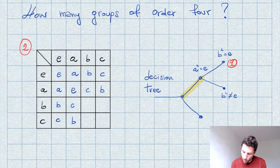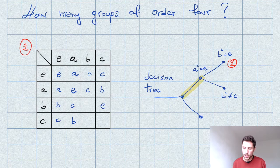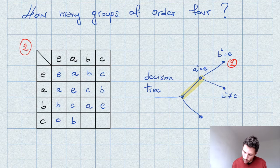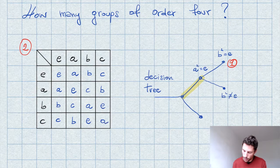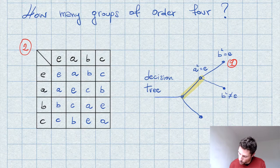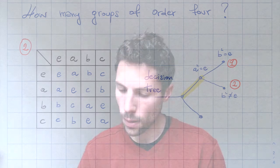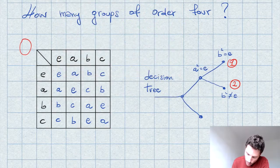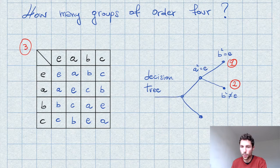If B squared is different from E, then the inverse of B has to be C — that is, B times C equals E. There is no other choice than having A in the remaining entry, and for the same reason E and A follow. We then proceed to write down the table for the third group of order four.